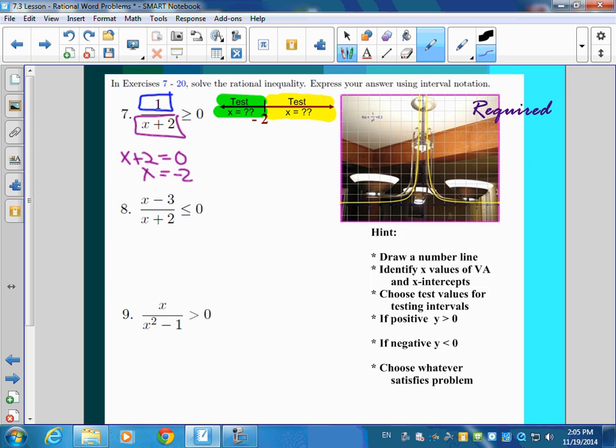So what's a nice number less than negative two? X equal to what? Negative three. Very good. Last hour somebody said negative ten; we worked with it. So this is going to be one over negative three plus two. Is that greater than or equal to zero? What do you think? No. So that's false.